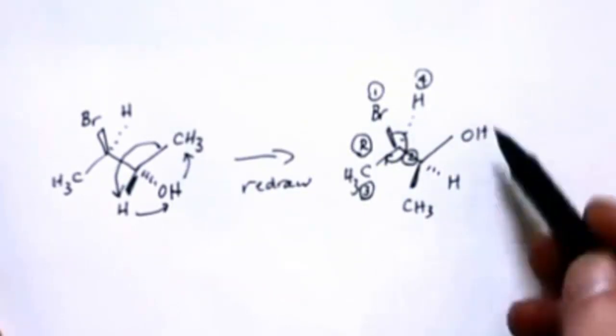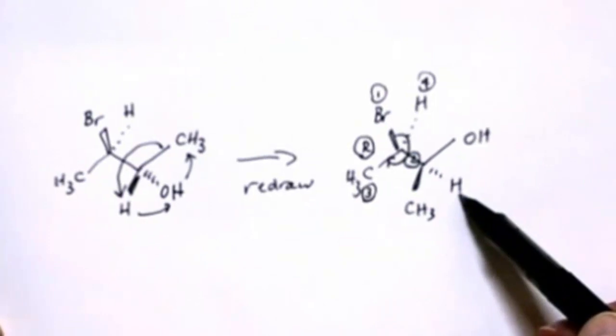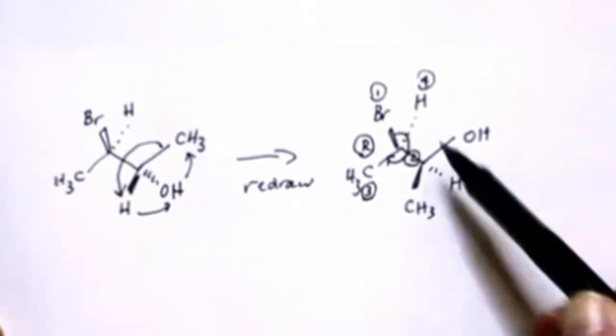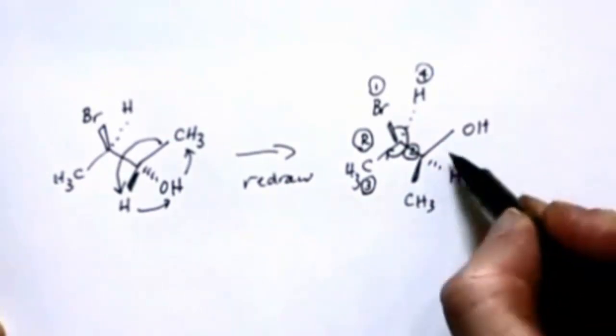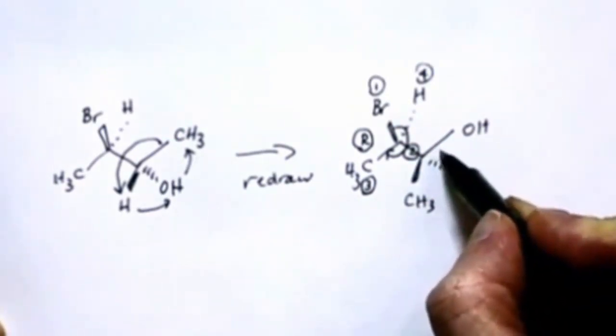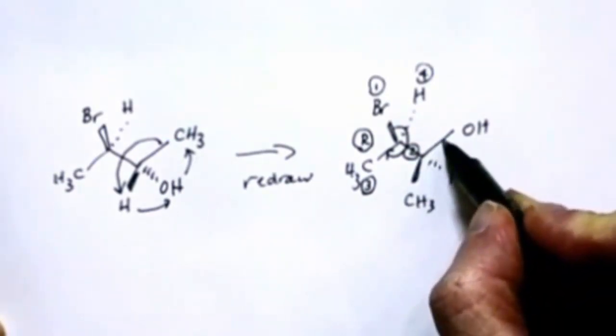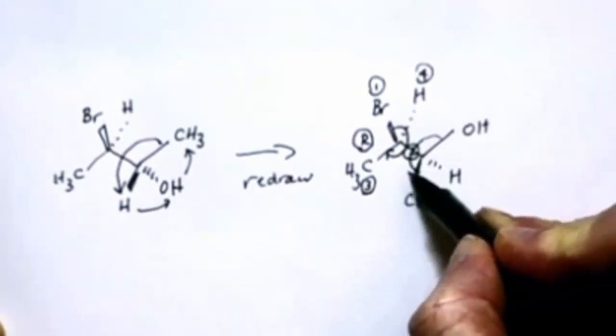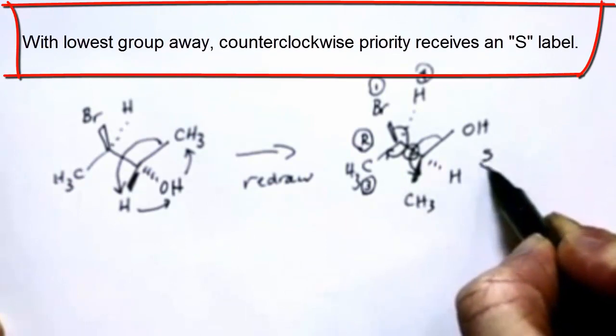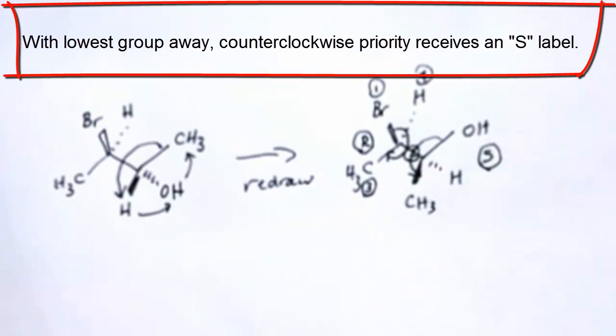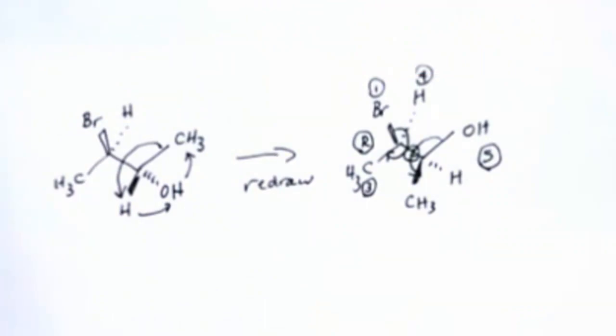For the other stereocenter, the hydroxy group's one, the hydrogen is four, the rest of the molecule is two, and the methyl group is three. So this one is going to go counterclockwise and it's S. I'm not going to put numbers on it because it's a little bit too complicated to look at.